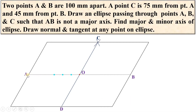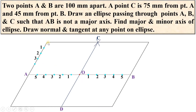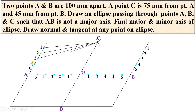Now divide the distance OA into 4, 5, or 6 equal parts. Here I have taken 6 equal parts, but you can use 4 or 5 as well. Similarly divide the other sides into the same number of equal parts — all four sides must have 6 equal parts. Now join C1, C2, C3, C4 and C5.